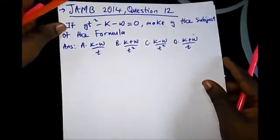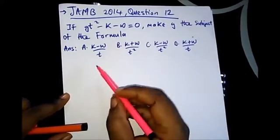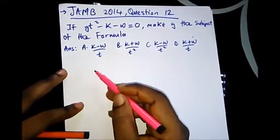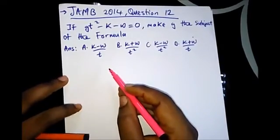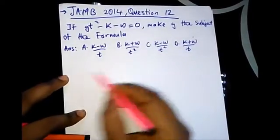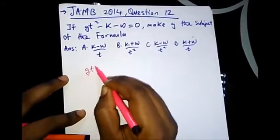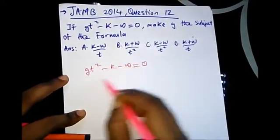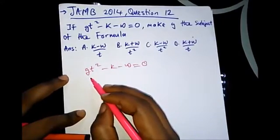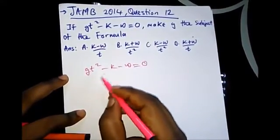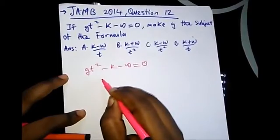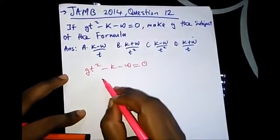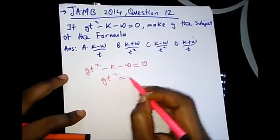The next question is from JAMB 2014 question 12. It says: if gt² - k - w = 0, make g the subject of the formula. This is quite easy, so it should be fast to solve. It's like a bonus mark, but some people still find change of subject of formula tricky. Carrying all the other values to the right-hand side, we have gt² = w + k.